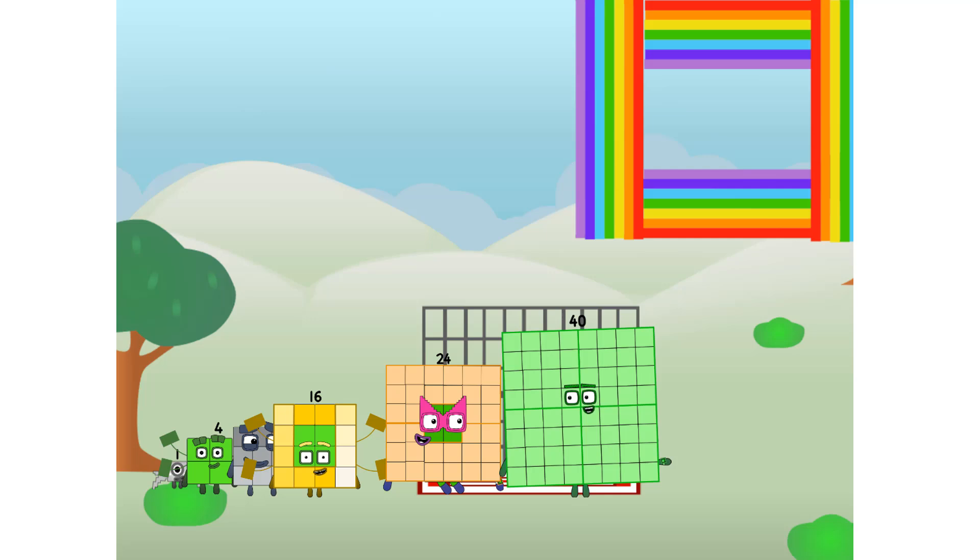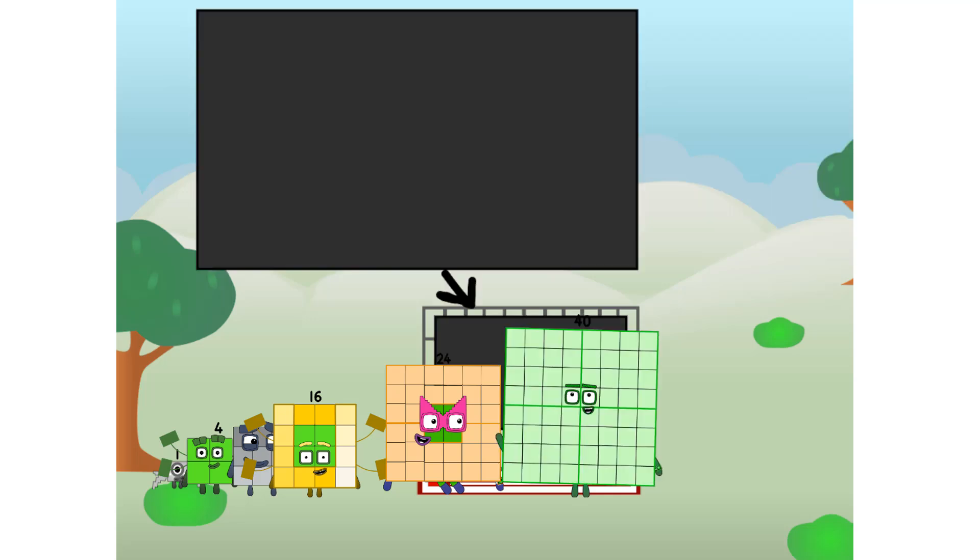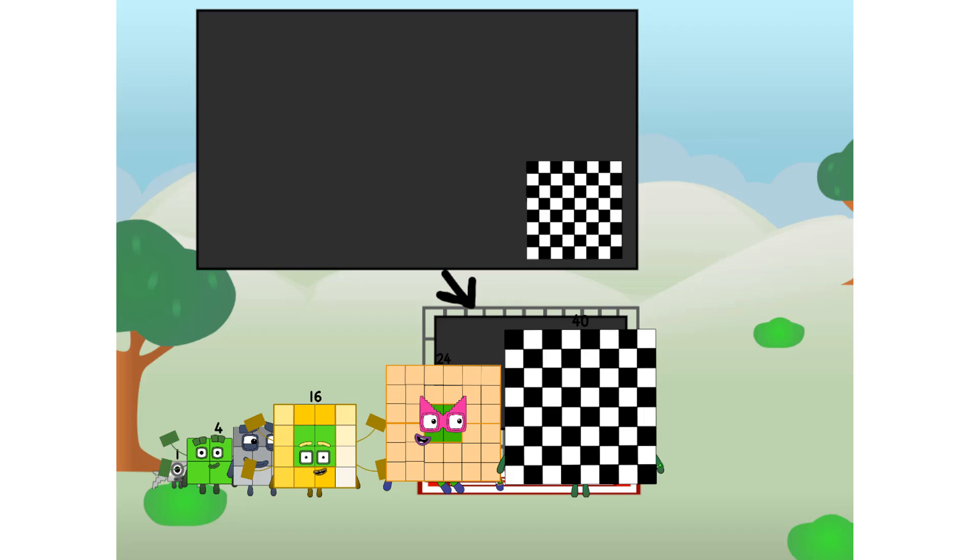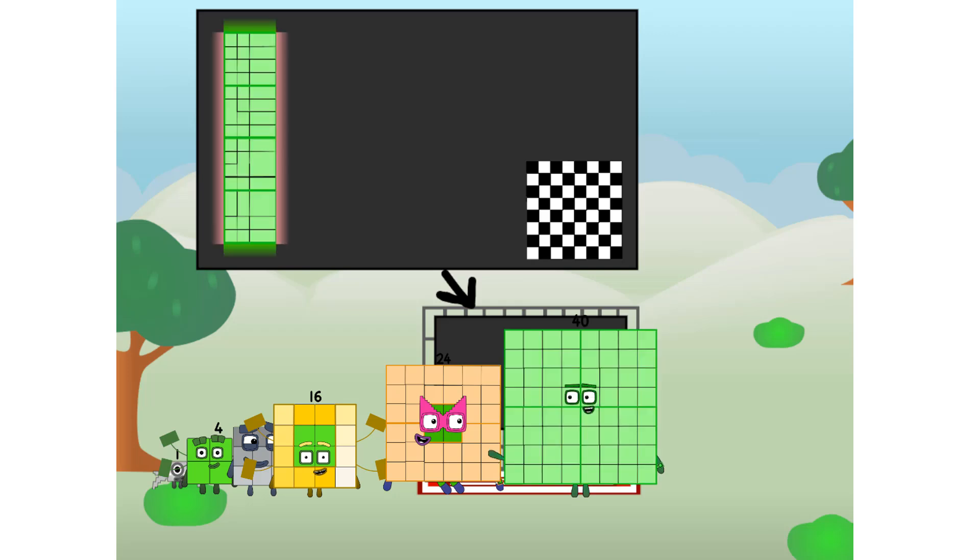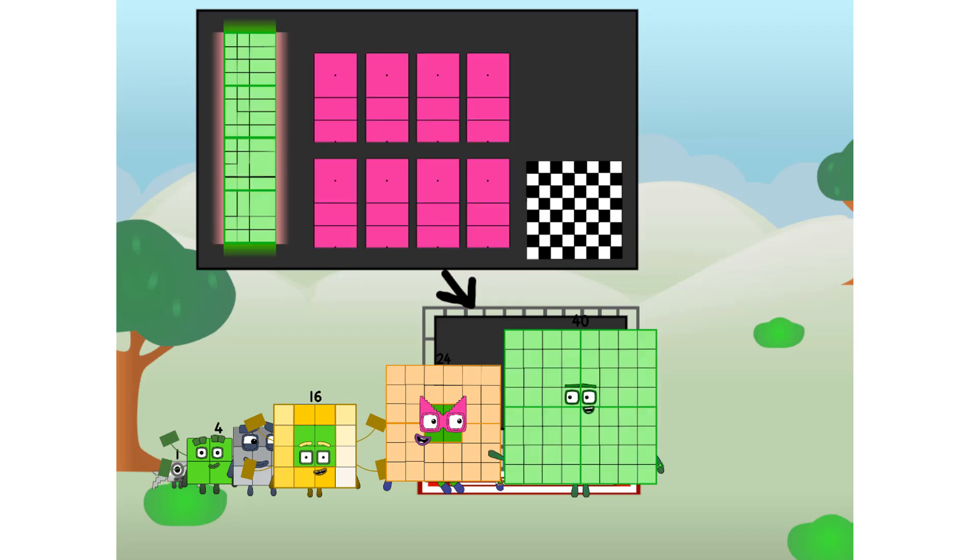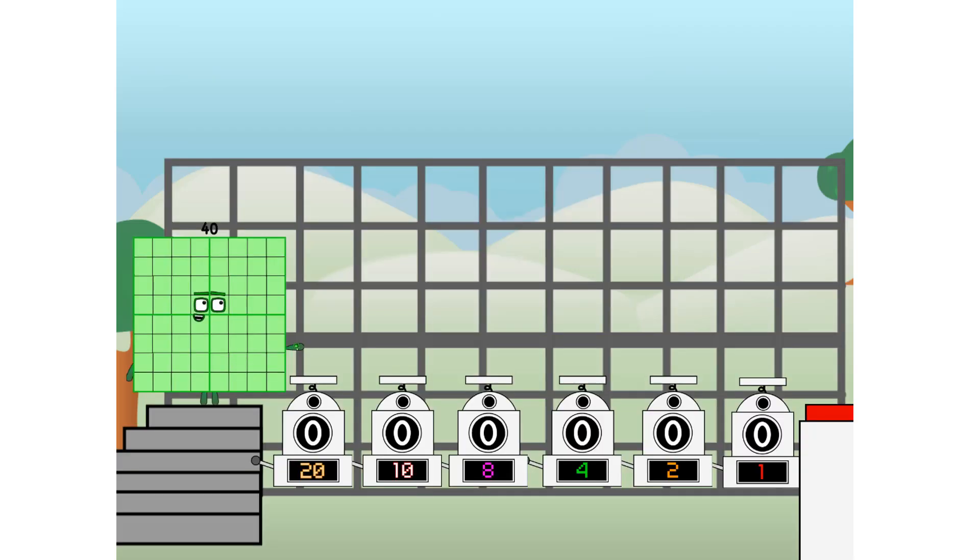There you are, this way. I've got so much to show you. I am 40, and I can be a strong square, a chessboard, a super rectangle, 8 octoblocks, or even a super cube. But today, I want to show you a little trick I call binary boosters.